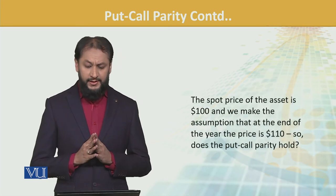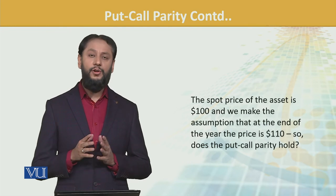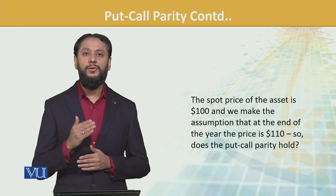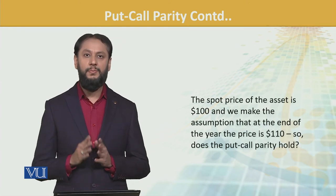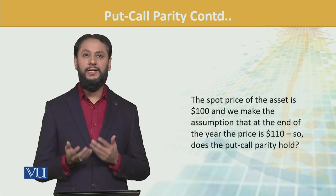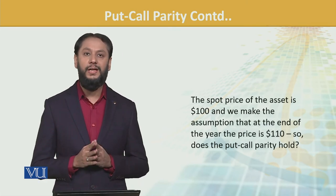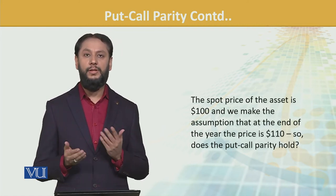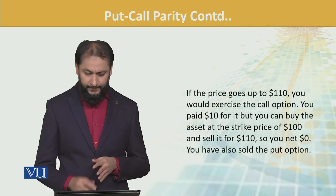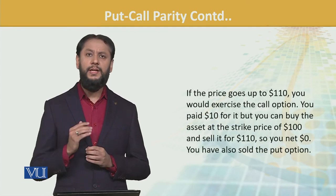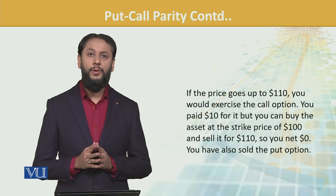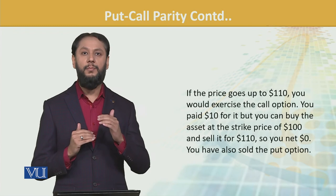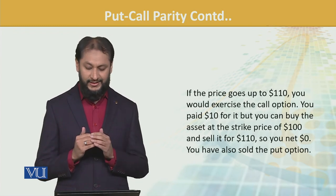The spot price of the asset is $100. We make the assumption that at the end of the year the price is $110 — meaning the market price becomes $110. Now we need to see whether put-call parity holds. If it holds, both sides should be equal; if not, they would vary. If the price goes up to $110, the call option will be exercised — yes, because the exercise price was $100 and now the market price is $110, so it is in the money.